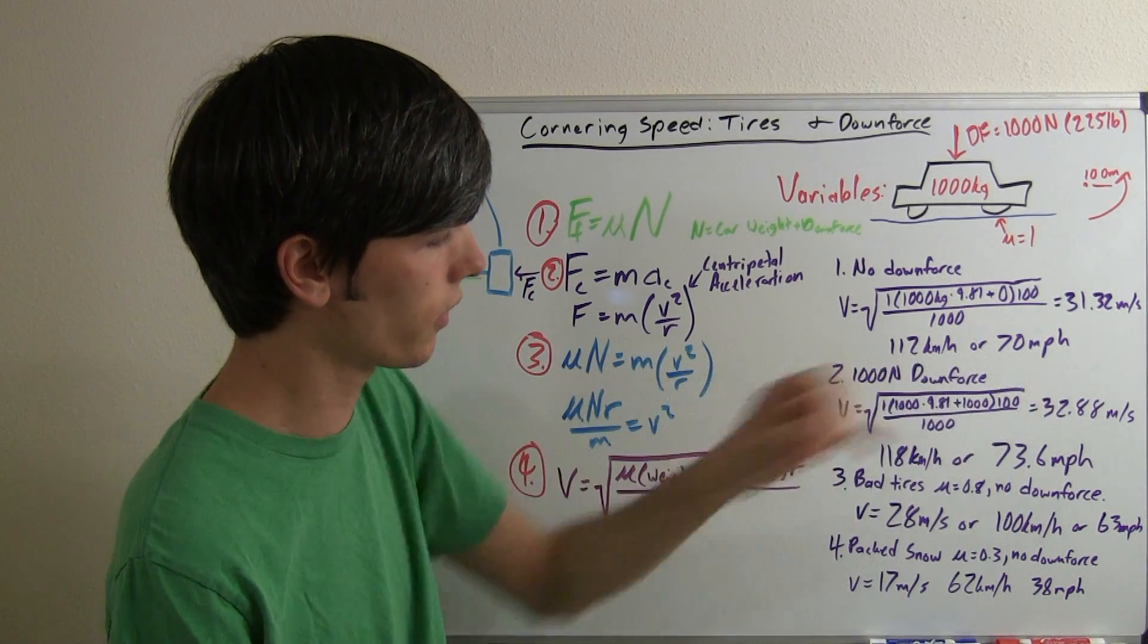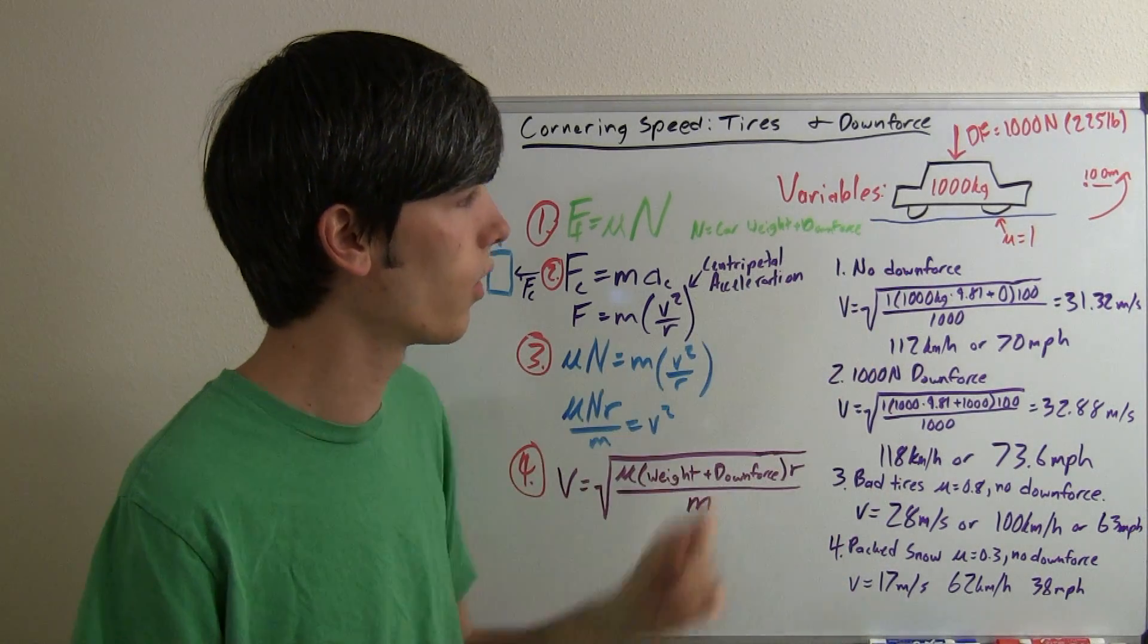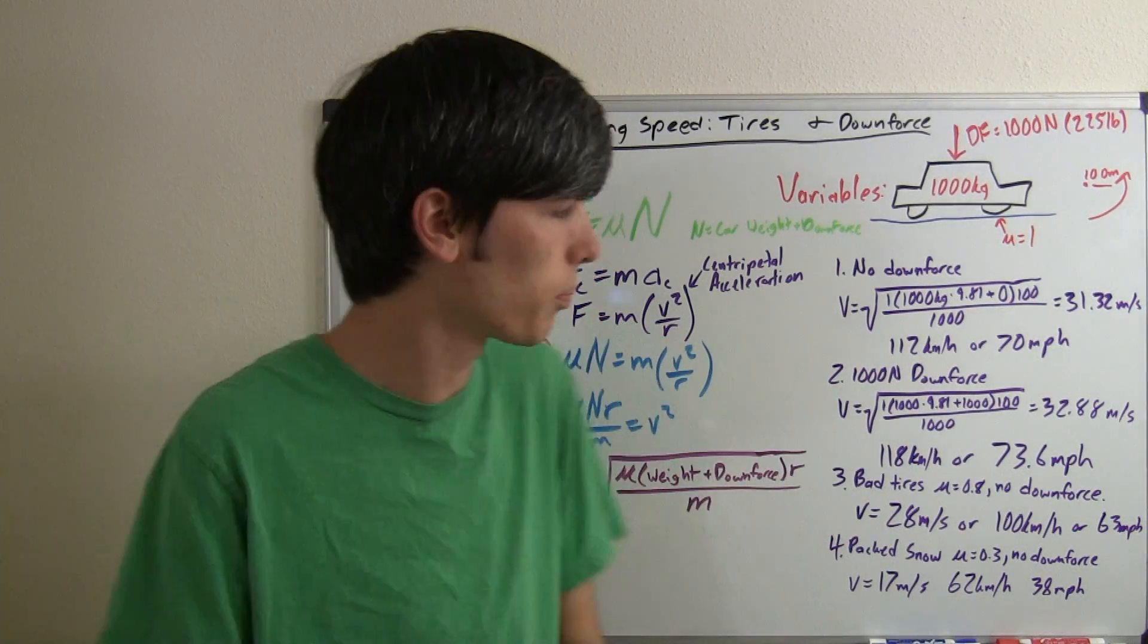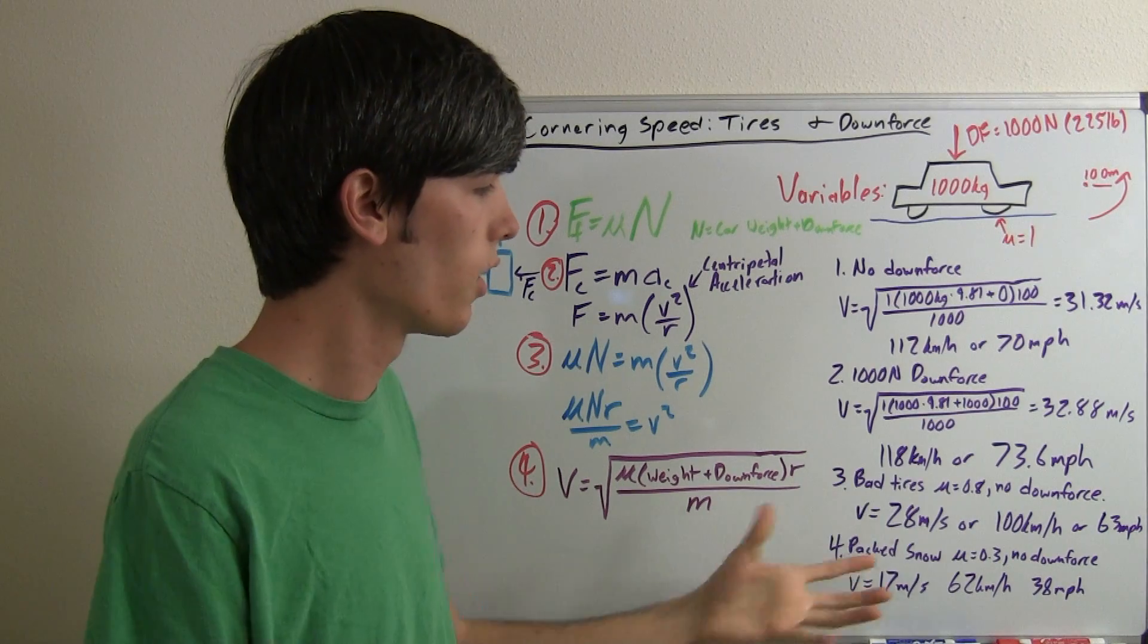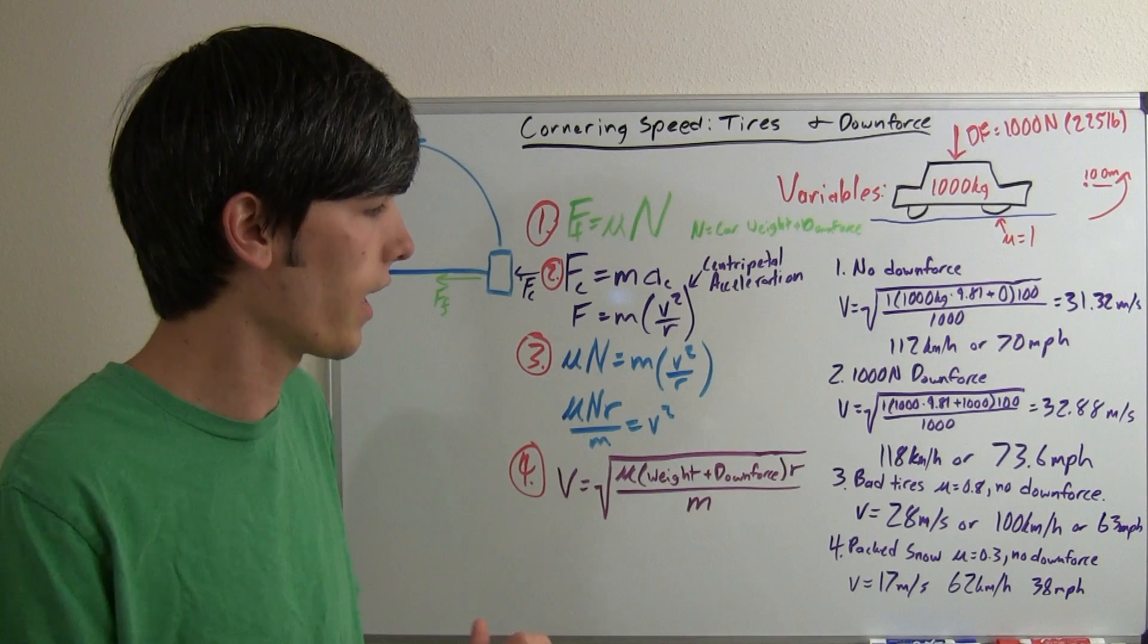So I mean look at that, that's 32 miles per hour slower just because we're on snow rather than asphalt. And yes, that makes perfect sense. It's just to see the math behind it is a little eye-opening and you realize why exactly that's the case.